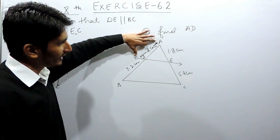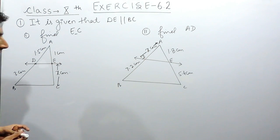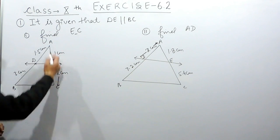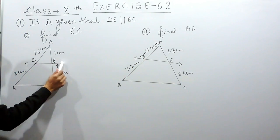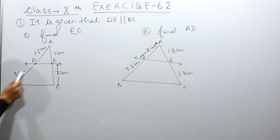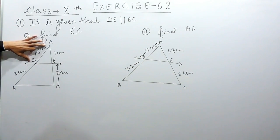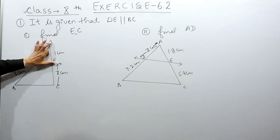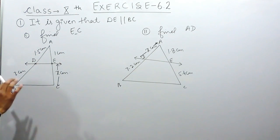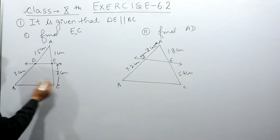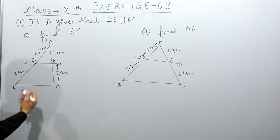We know the Basic Proportionality Theorem, which says that in any triangle, if you draw a line parallel to the third side, that line must cut the other two sides in proportion. The ratio between the two parts on one side must be equal to the ratio between the two parts on the other side.